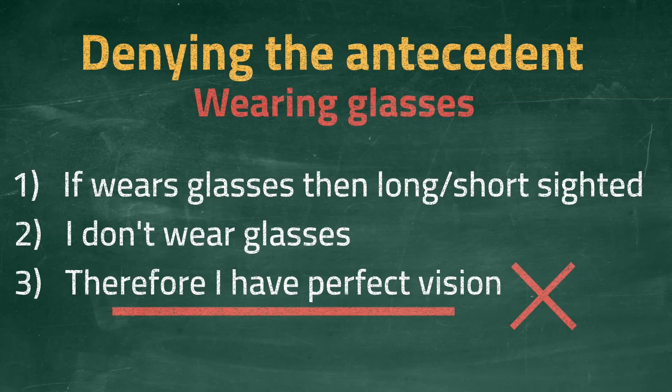I should also point out that it is wrong to say that because the argument is fallacious, you therefore don't have perfect vision. This is also invalid. We do not know whether you have perfect vision or not. All we do know for certain is that you don't wear glasses.